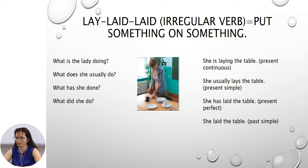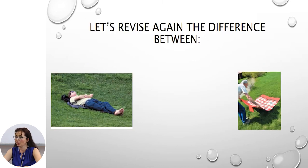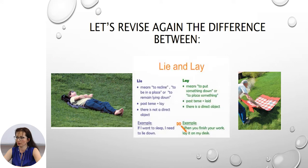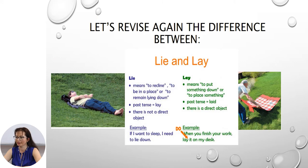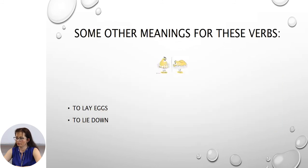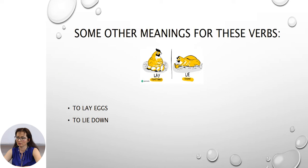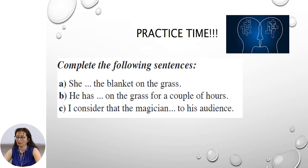Let's revise the difference between lie and lay. 'Lie' means to recline; 'lay' means to put something down or to place something. In the past tense, 'lay' has a direct object. Some other meanings for these verbs: to lay eggs, and to lie down. Look and remember.